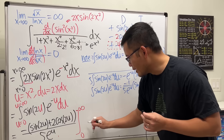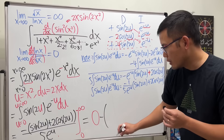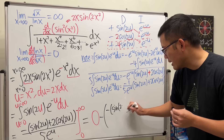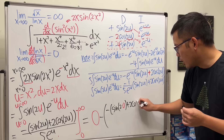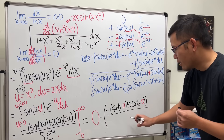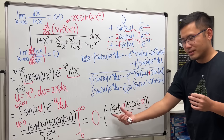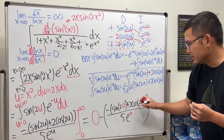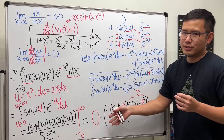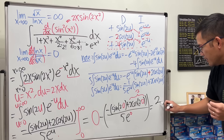The first part is zero, so we subtract the value at u = 0. Plugging in zero: −(sin(0) + 2cos(0)) / (5e^0) = −(0 + 2·1) / (5·1) = −2/5. Then 0 − (−2/5) gives us positive 2/5 as the final answer.